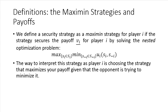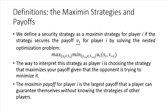The way to interpret this intuitively is that player I is choosing a strategy that maximizes his own payoff, given that the opposition is trying to vindictively punish him by minimizing it. You can think of the Maximin payoff for player I as the largest payoff that player I can guarantee themselves without knowing the strategy choices of the other players.